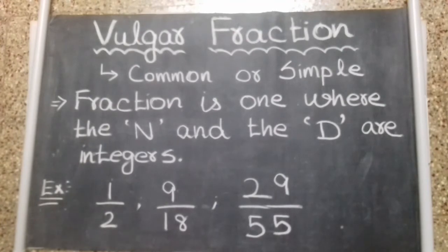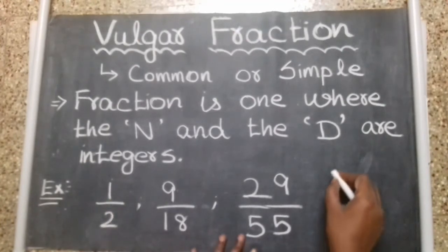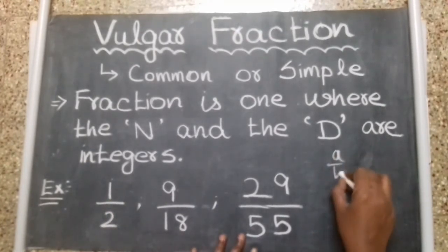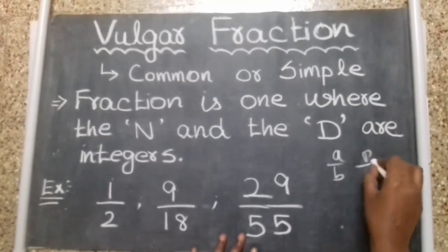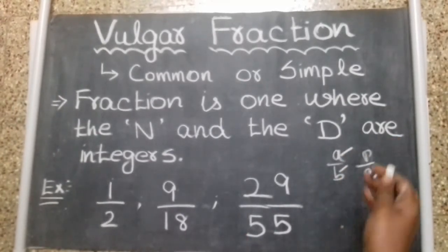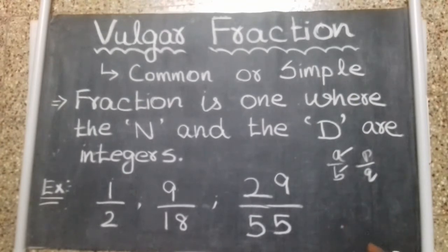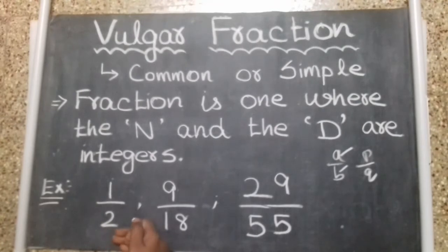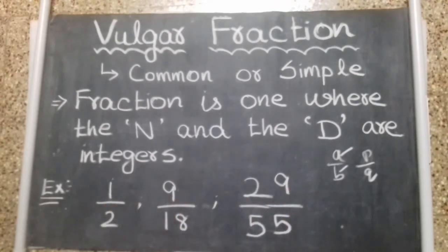For example, you can see 1 by 2. In the normal way, fractions are written as A by B or P by Q. A is in the numerator, B is in the denominator — the number on the top is the numerator, the number on the bottom is the denominator. So numerator is 1, denominator is 2. Examples: 1 by 2, 9 by 18, 29 by 55 — these are examples of vulgar fractions.